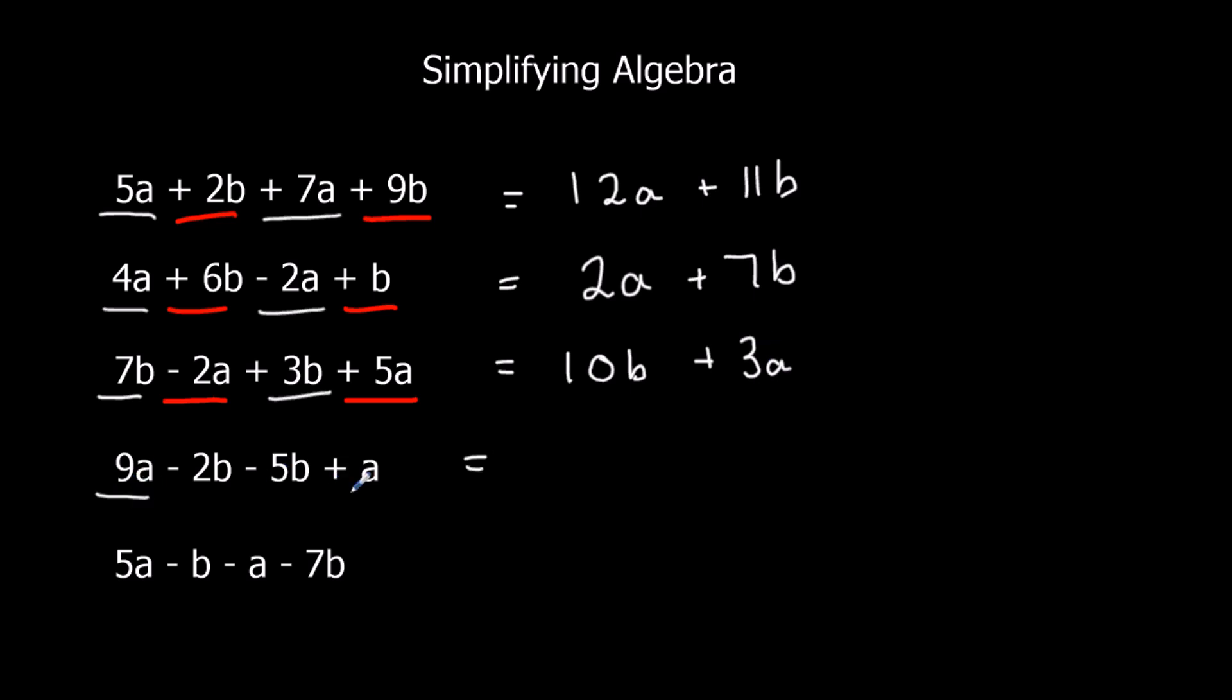9a plus another a, and I've got minus 2b, minus 5b. So, minus 2, minus 5, goes to minus 7b.